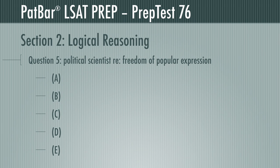Question 5 presents a political scientist's argument that a protest rally featuring a message the government supports does not prove that the government supports freedom of popular expression, which may include a message the government does not support. You are expected to find the one assumption required by that argument. This problem tests your ability to think like a lawyer — what evidence has been presented and what has not? What happens to an argument when you assume something to be true or false? It must collapse in order to be a requirement.